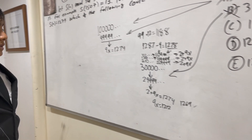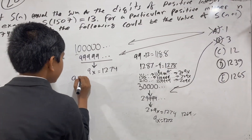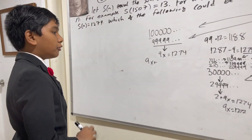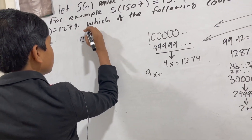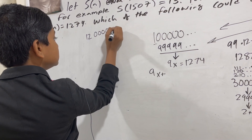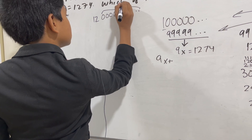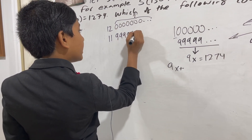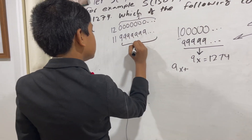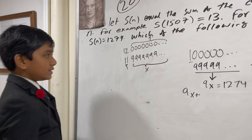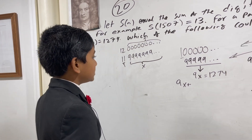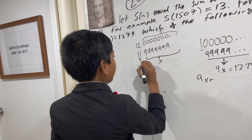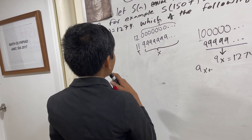We're starting to see a pattern: we have 9x + (1 minus whatever the answer choice is). Let's test choice C, which is 12. For s(n+1) = 12, n+1 could be 12 followed by zeros, meaning n = 1199...9. We could also have 1199...9 in other arrangements, but the important thing is the digit sum of the non-nine part.